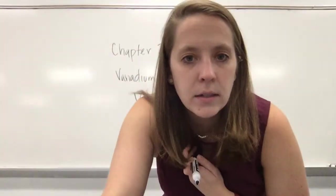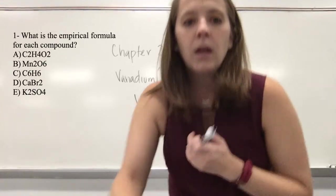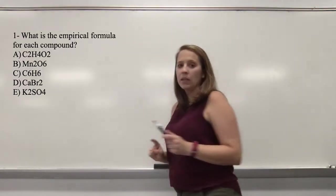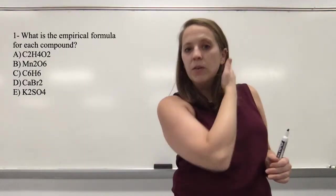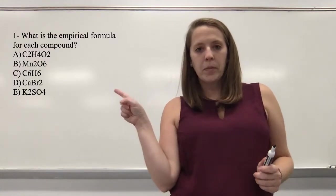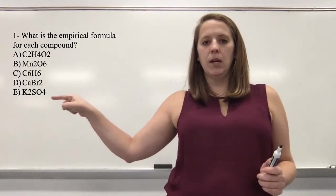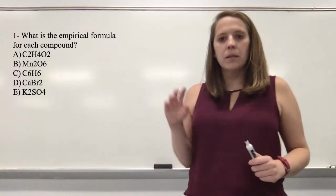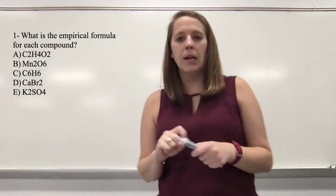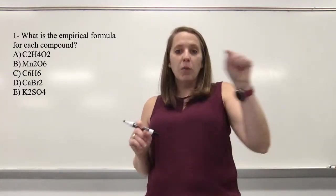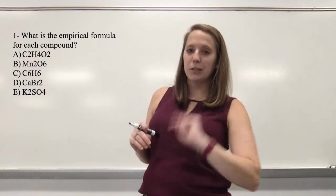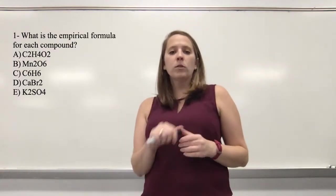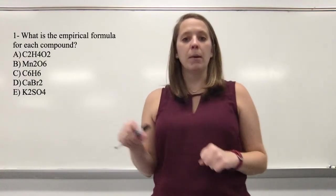Let's look at the first question. I want to apologize for some formatting issues — where it says K₂SO₄, the subscript numbers are not showing as subscripts. The platform I'm using makes that complicated and I'm still figuring it out. The first question asks: what is the empirical formula for each compound? An empirical formula is the lowest whole number ratio of all of the participants.